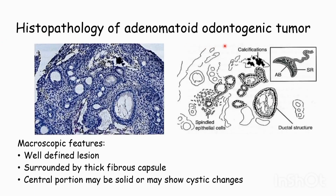Histopathology of Adenomatoid Odontogenic Tumor: Microscopic Features. These are well-defined lesions that are usually surrounded by a thick fibrous capsule, and the central portion may be dissolved or show some cystic changes.